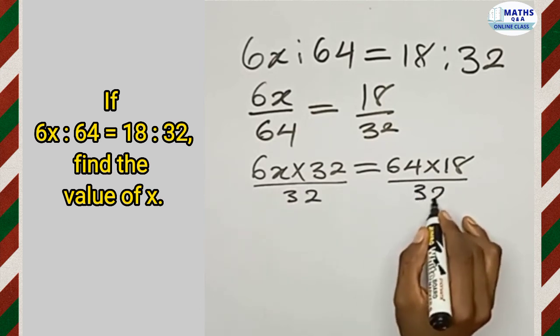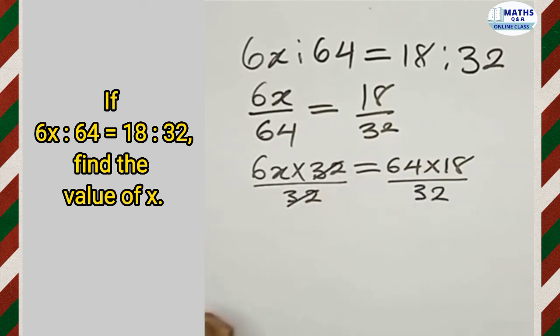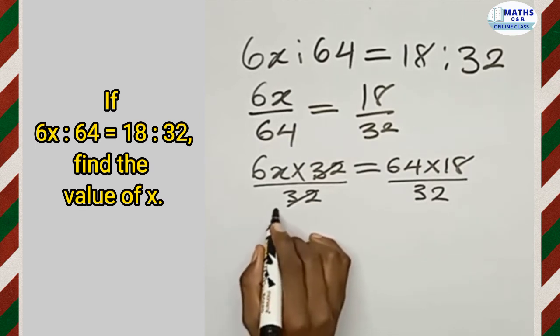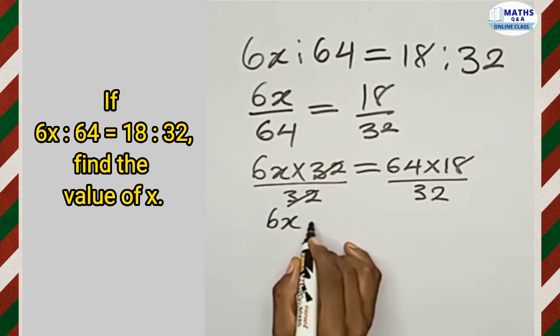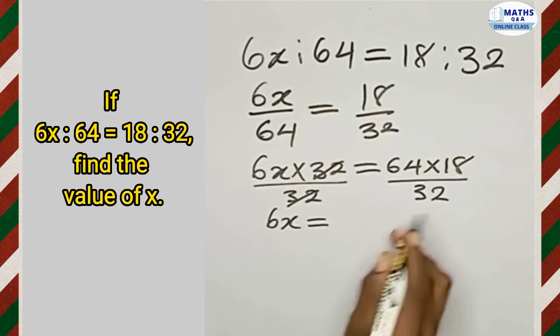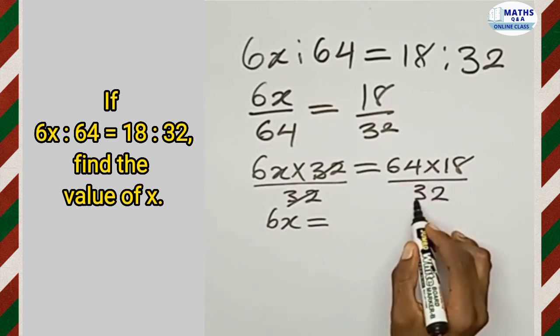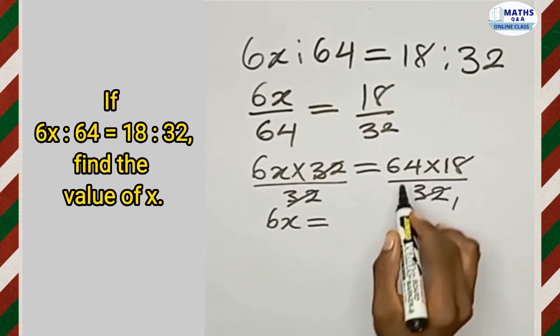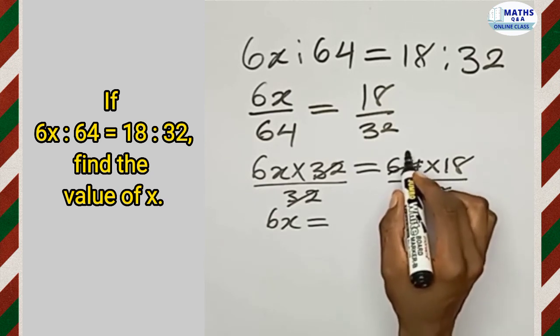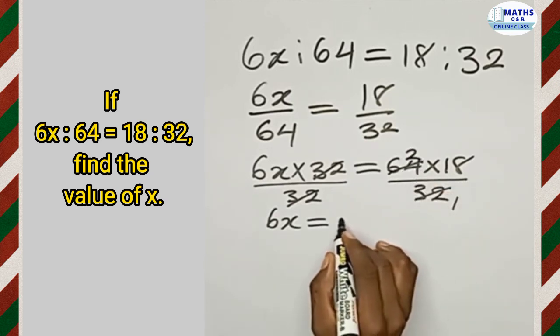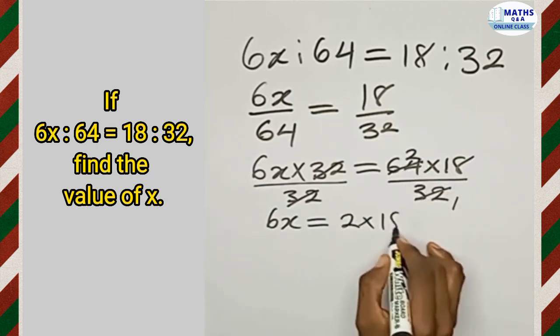So 32 cancels, then we have 6x equal to—now 32 divides itself once, it divides 64 two times, so we have 2 multiplied by 18.